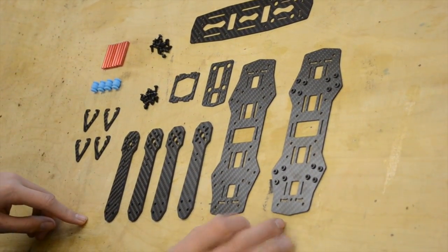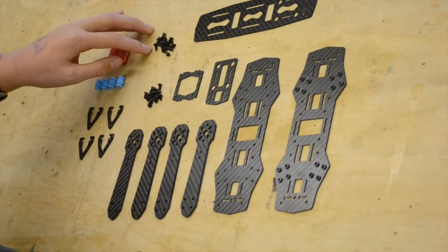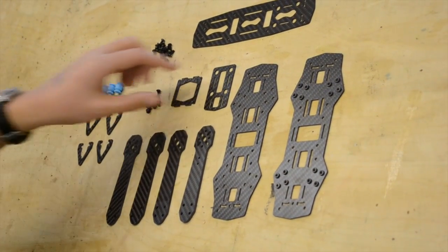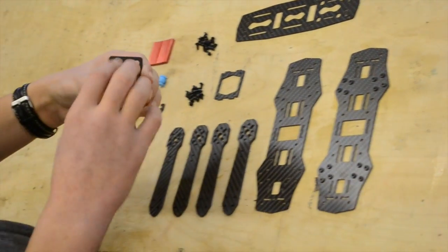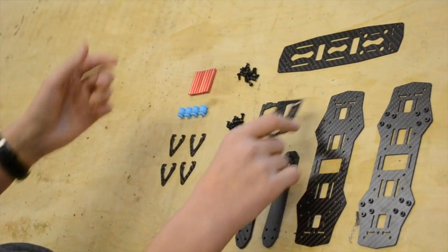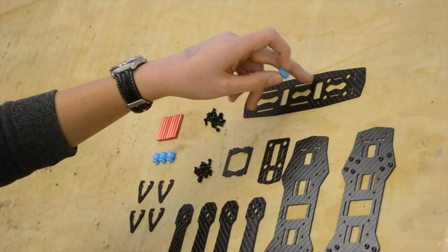The arms are held between the bottom plates here with these 10mm screws. You've got this piece here, which your action camera sits on, so GoPro or something like that. That's held off the top piece, this piece,